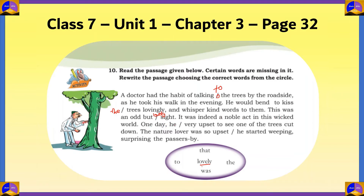Fourth blank: 'One day he [dash] very upset to see one of the trees cut down.' This happened in the past and the sentence needs an auxiliary verb, because no verb is used in the first part of the sentence. The auxiliary verb in the circle is 'was,' so the answer is 'was.' He was very upset.